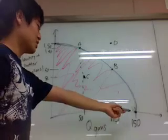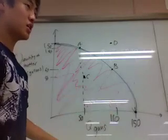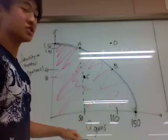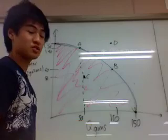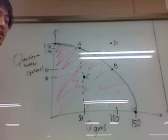In the extreme case, if everyone, let's say I have 200 workers or a certain amount of workers, and if everyone works only making guns, you get 150 guns or 150 gallons of butter to make it easy.